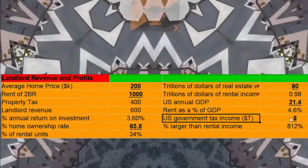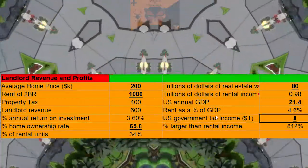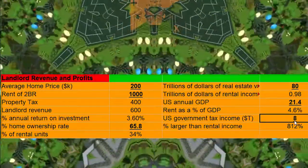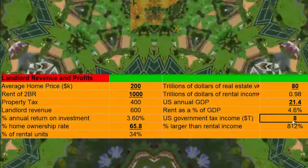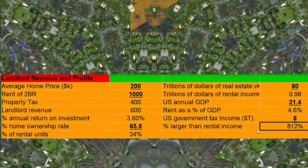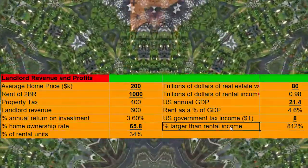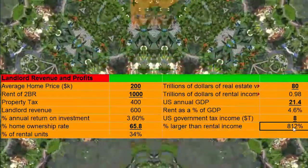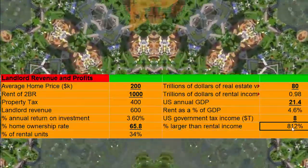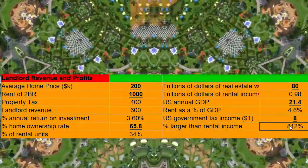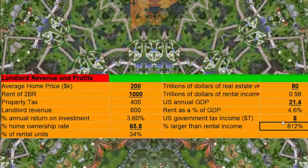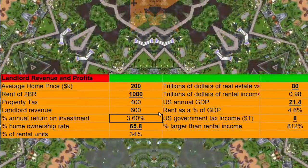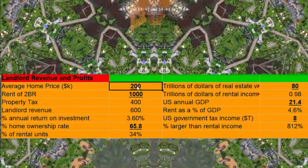And then I just threw this in here too. Local, state, and federal spending is $8 trillion, which means that taxation is 812% more than rental profits. So this is just a really interesting little scenario here.